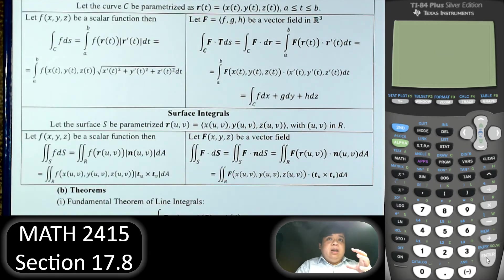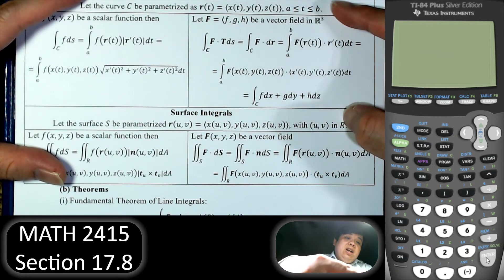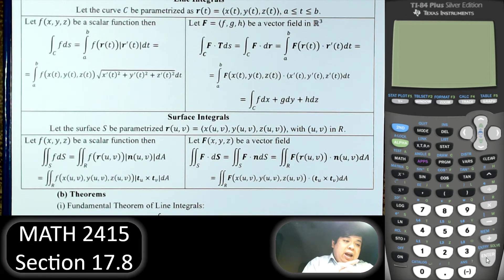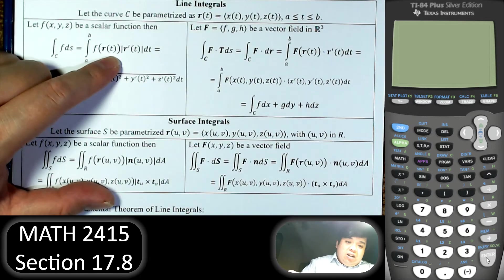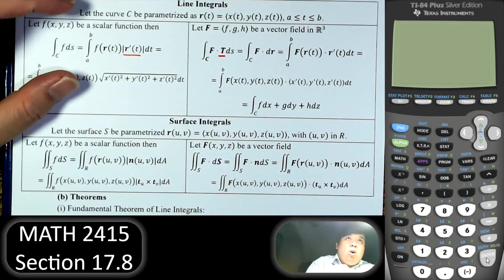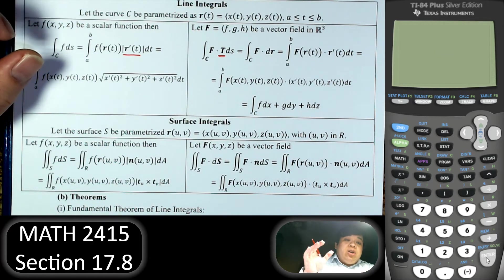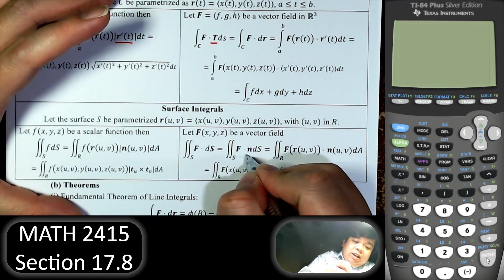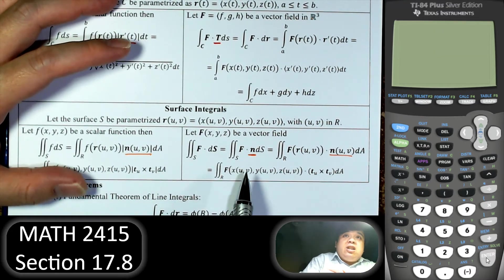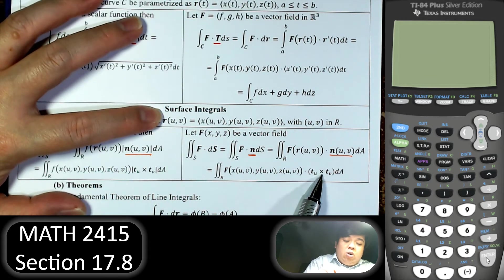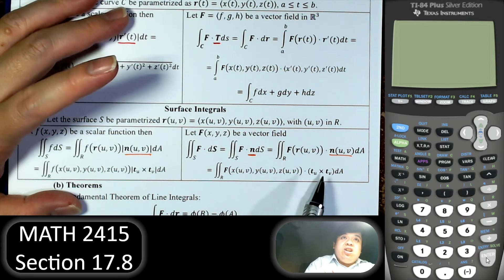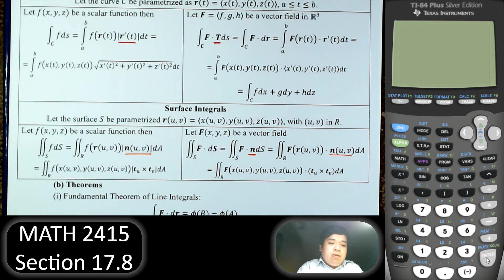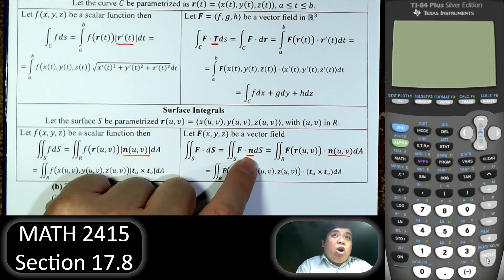Let's focus on the big picture. The first step is always to parameterize the surface or the line. For the scalar function line integral, the characterization is the tangent vector. For the surface integral, the characterization is the normal vector, given by the cross product of the derivatives with respect to u and v — the tangent vector in the u-direction crossed with the tangent vector in the v-direction. When we have the surface integral with the normal vector N, that's the flux integral.